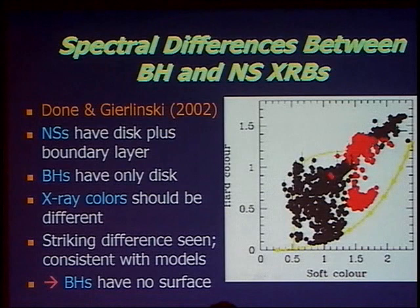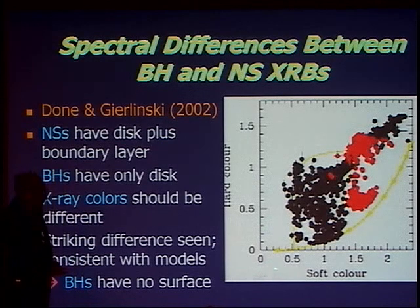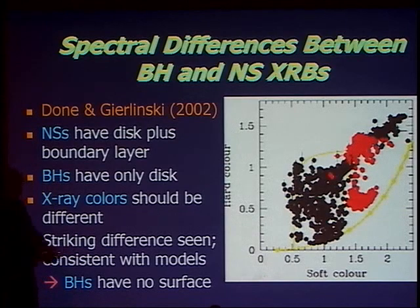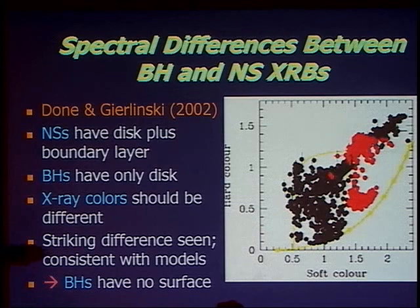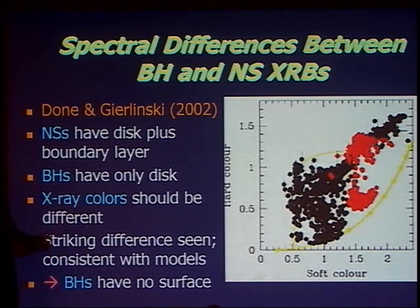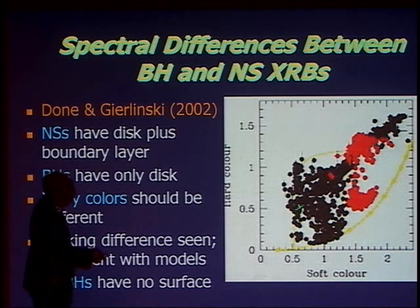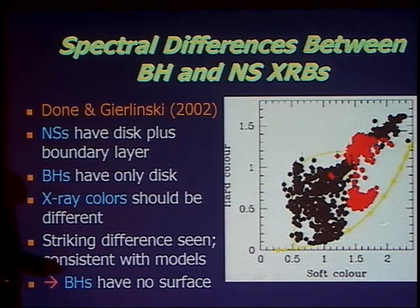This is a nice argument by Chris Doan and Marc Gerlinski, who took all bright soft-state data of neutron star and black hole X-ray binaries and plotted them on a color-color diagram, with a soft color in the few-keV range and a hard color around 10 keV. All the black dots are black hole system observations — for each source in the thermal dominant state, they extract its color and plot a dot, giving many measurements per source. The red dots are the neutron star systems.